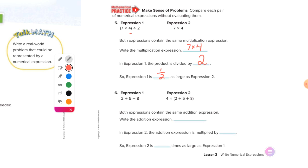Okay, number six. Both expressions contain the same addition expression. Write the expression, Caleb. Caleb, what is it? Two plus five plus eight. In expression two, the addition expression is multiplied by what, Drake? Four. By four, four.